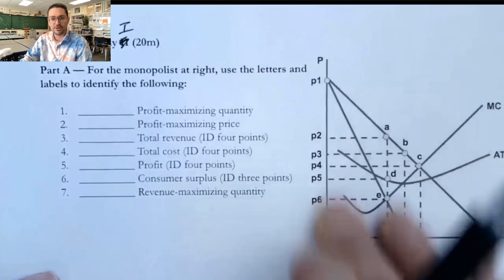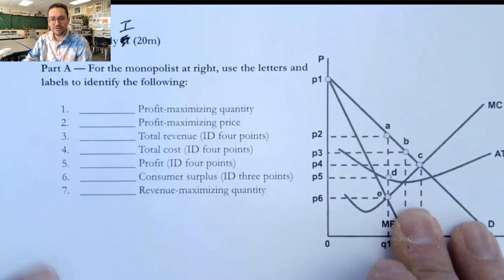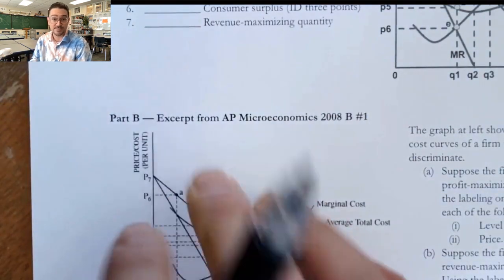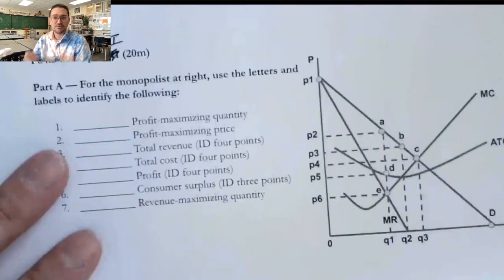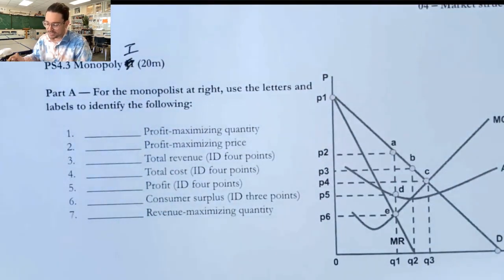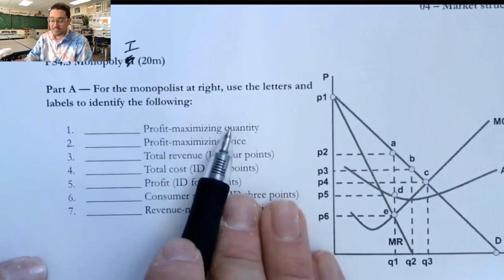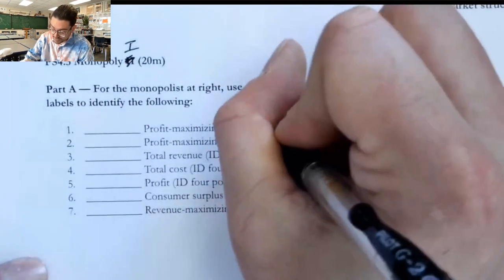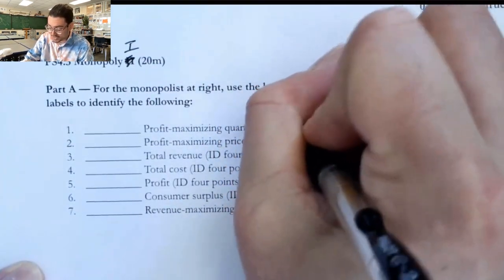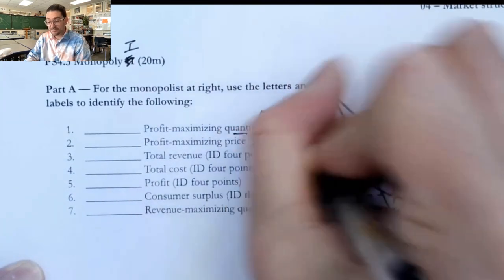I know that this seems really scary with all these lines and everything, but it's actually a fairly common way that the AP exam is structured. And so I think it's good for us to get some practice with what that looks like. So the first part and the second part say profit maximizing quantity and price. And that's always going to be MR equals MC for the quantity and then the demand curve for the price.